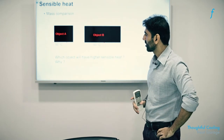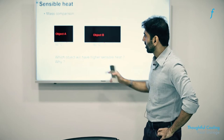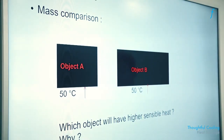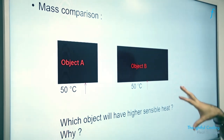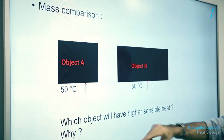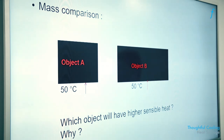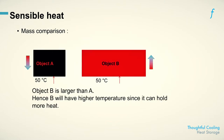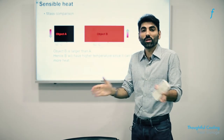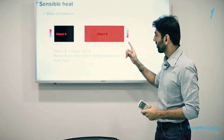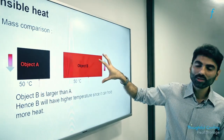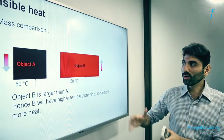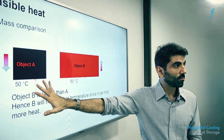Another nuance of sensible heat: here you have two objects at the same temperature, but the one on the right has more total mass, indicated by a larger area. Which object will have the higher sensible heat? The second object on the right has a higher total quantity of heat, because even though each molecule has the same amount of energy, there are more molecules — more stuff — in that object, and hence the total quantity of heat is greater.